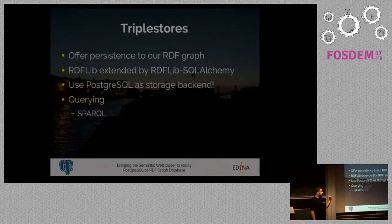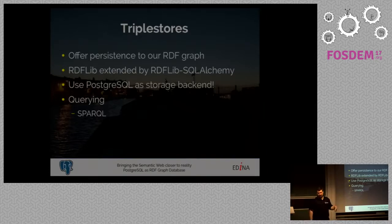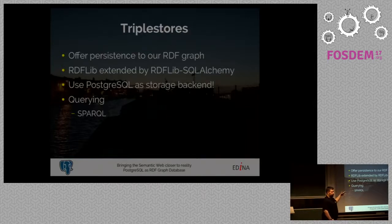To store our triples, we need triple stores, which offer persistence to our graph — a way to put it on disk, index it, and query it. We went down a route that not many people use: we used RDFLib, a library in Python, and an extension called RDFLib SQLAlchemy. There used to be an extension that connected RDFLib directly to Postgres, but it's been abandoned and the author says please use SQLAlchemy instead. So we decided to use Postgres to store all these triples.